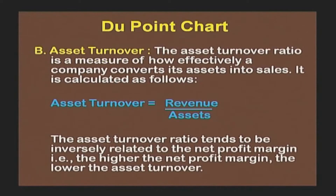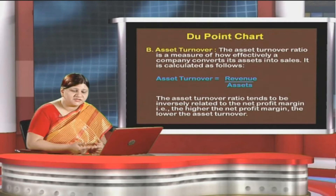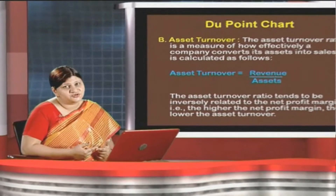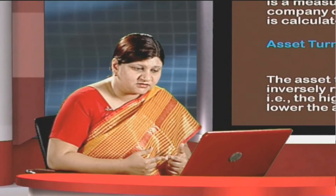Asset turnover is another component under the DuPont chart. As the name suggests, it is a ratio which measures how effectively a company converts its assets into sales. It is calculated as: Asset Turnover = Revenue / Assets, because we are transforming assets into sales to generate income. So it is a ratio of revenues to assets.